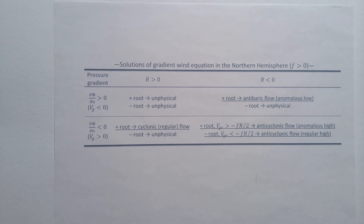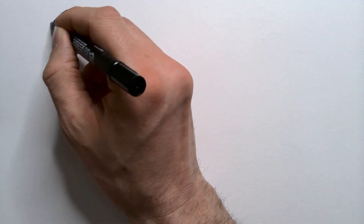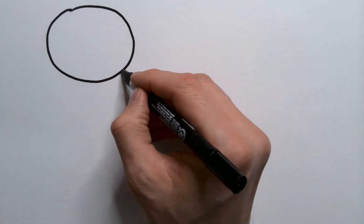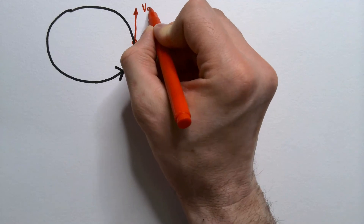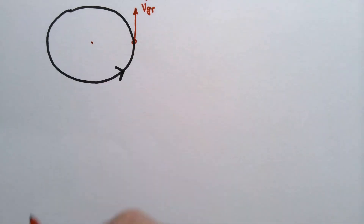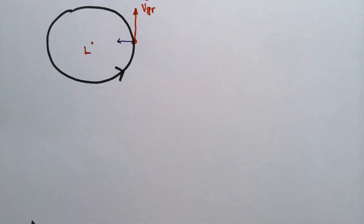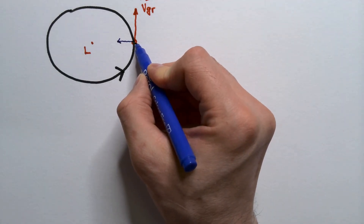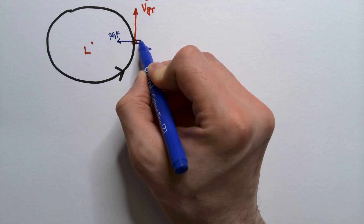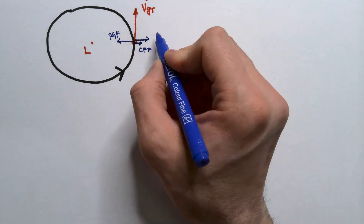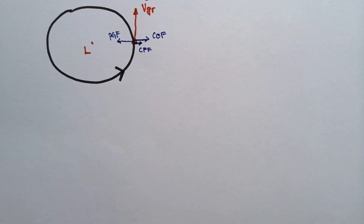Now let's plot the four physical solutions. First, regular cyclonic flow: circular motion, low pressure at the center, counterclockwise direction. At a chosen point, V gradient is tangent. The pressure gradient force points inward toward the low, centrifugal force points outward, and Coriolis force also points outward — these two balance the pressure gradient force inward. This is called the regular low.